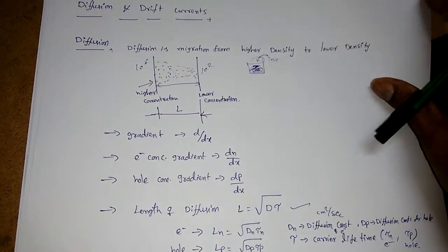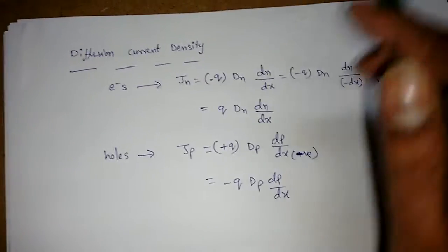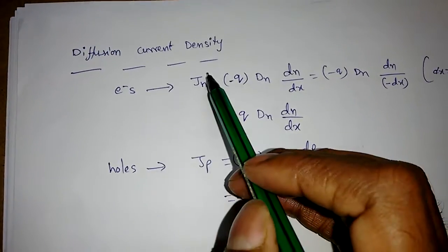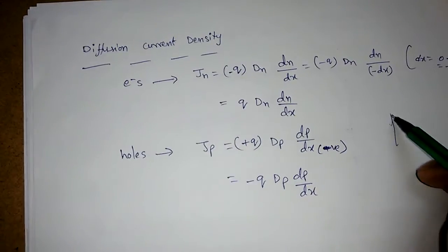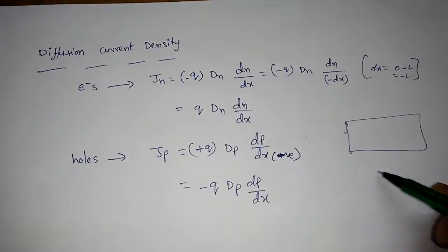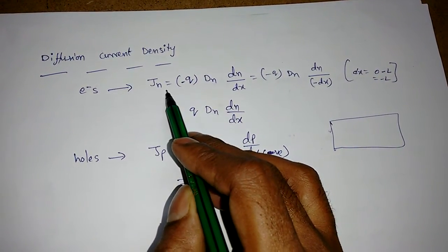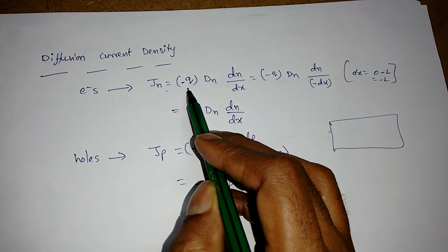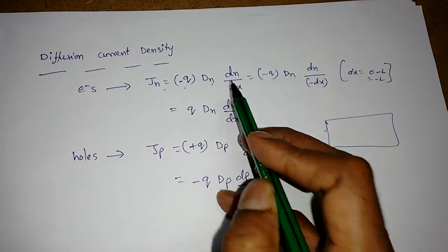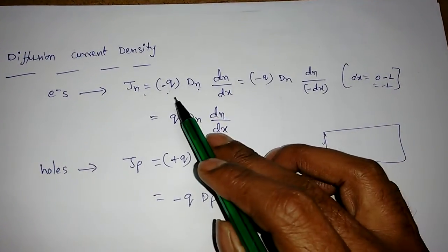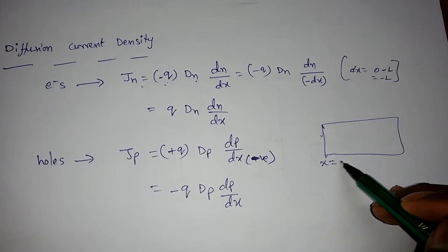Whenever electrons are diffusing from higher to lower concentration, the movement of electrons and holes generates a current — this is the diffusion current. The electron diffusion current density Jn is given by: Jn = −q × Dn × (dn/dx), where −q accounts for the negative charge of electrons and dn/dx is the electron concentration gradient.